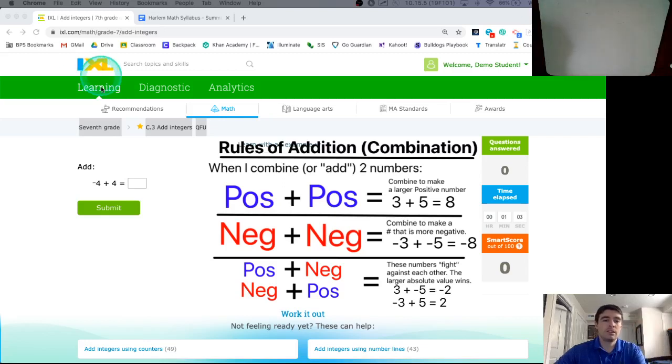Hello, Highland Macross athletes. This is an IXL support video to help you with the 7th grade assignment called C3, the one that's on add integers.